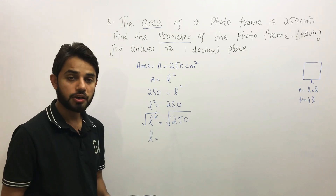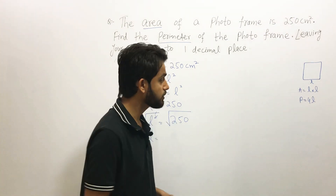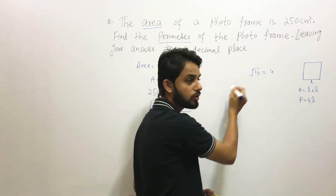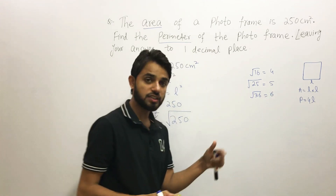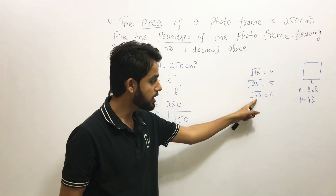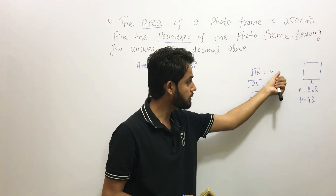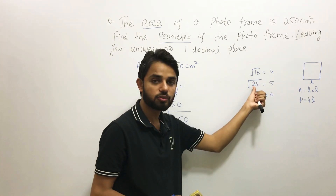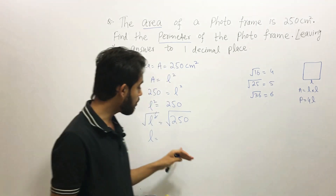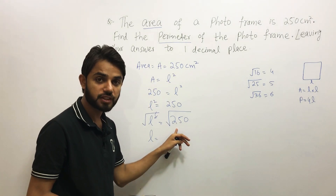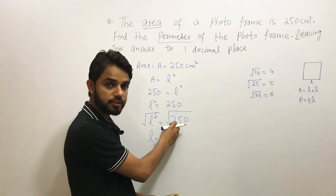It is easy to find the square root of a perfect square — for example, the square root of 16 is 4, since 4 times 4 is 16. Square root of 25 is 5, and square root of 36 is 6. A perfect square means you multiply the same number twice to get the result. However, 250 is not a perfect square, so we need a different technique.